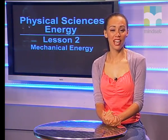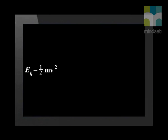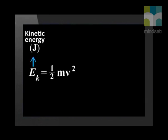We know that kinetic energy is the energy of motion. It does not matter whether it is vertical or horizontal motion — anything that is moving has kinetic energy. Remember that the formula for the calculation of kinetic energy is E_K equals half M multiplied by V squared, where E_K represents the kinetic energy measured in joules, M represents mass in kilograms, and V is the velocity of the object in meters per second.